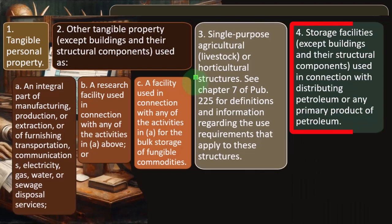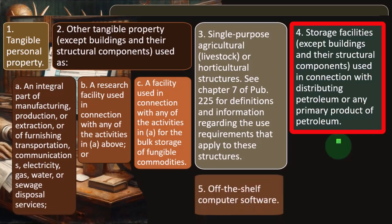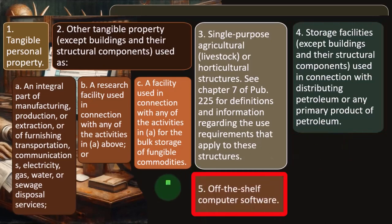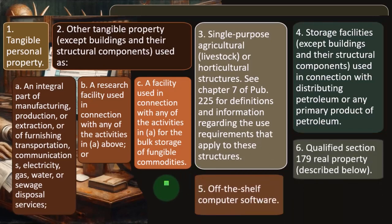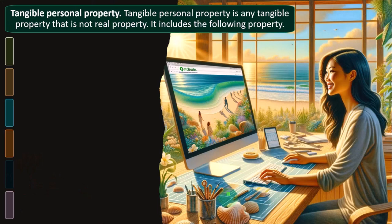Number four, storage facilities except buildings and their structural components used in connection with distributing petroleum or any primary product of petroleum. Five, off-the-shelf computer software. And six, qualified Section 179 real property described below.